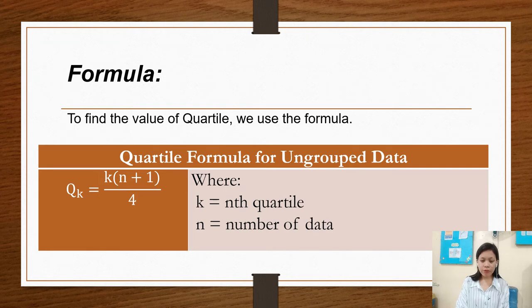So formula. To find the value of quartile, we use the formula. This is the quartile formula for ungrouped data. The formula is Q sub k equals k times n plus 1 over 4, where k is the nth quartile, and n is the number of data.